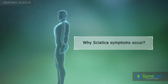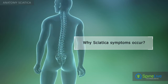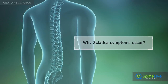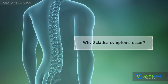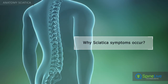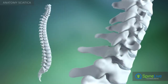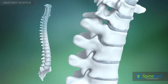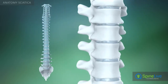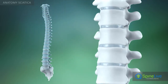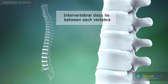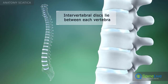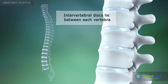In order to understand why sciatica symptoms occur, it's helpful to know the basic anatomy of the spine. The spine is made up of 33 individual bones called vertebrae. These are separated by intervertebral discs.